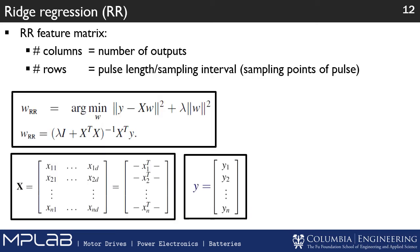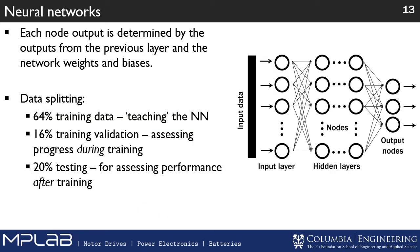The first machine learning model we use is ridge regression — essentially an advanced form of least squares, with a bias term represented by lambda that increases generalization. The neural network uses many layers of nodes: you put in the pulse data and through several matrix transformations you get your output. We split the data 64% or 80% for training and 20% for testing.